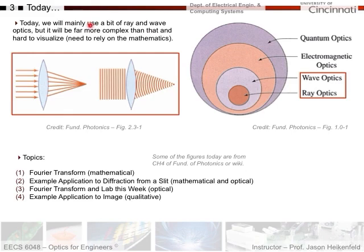Today we're going to use a bit of ray and wave optics, but it's going to be far more complex and hard to visualize — we'll need to rely on mathematics. We'll talk about the Fourier transform mathematically, apply it to diffraction from a slit, discuss what we're going to do in lab this week for optical filtering, and apply it to images, which will be mainly qualitative.